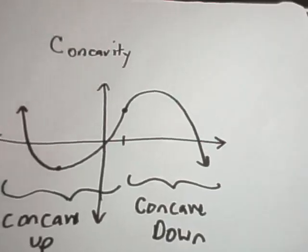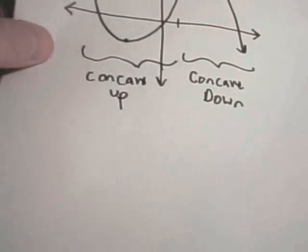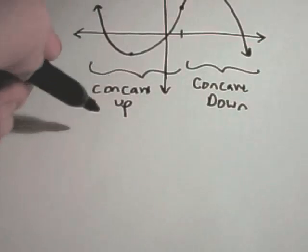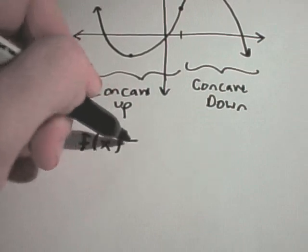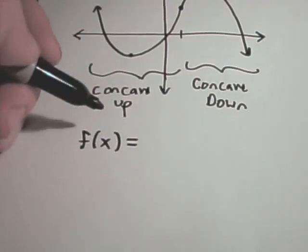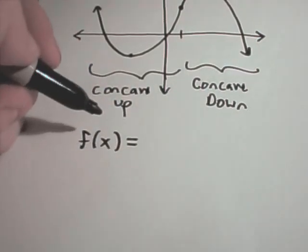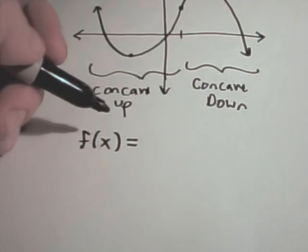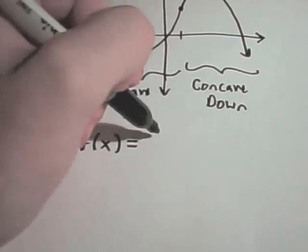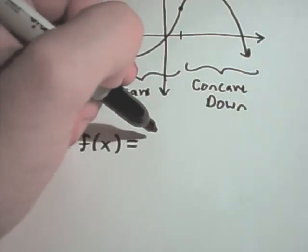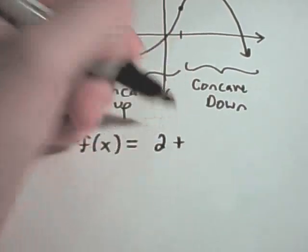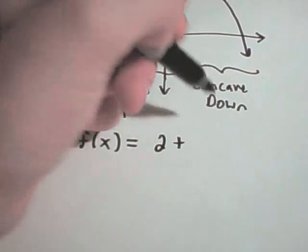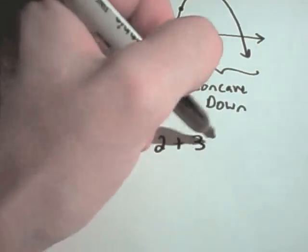Mechanically, to find where a graph is concave up or concave down, it's very analogous to what you do to find where a function is increasing and decreasing — except instead of looking at the first derivative, you're going to look at the second derivative.